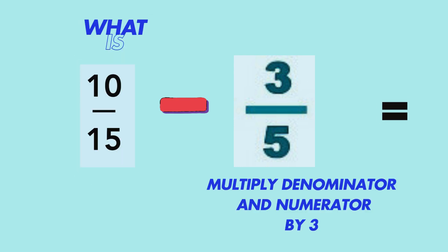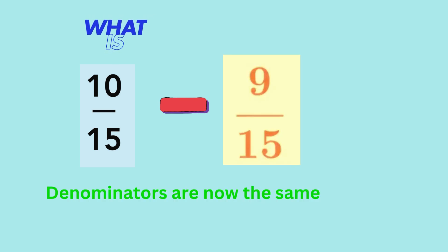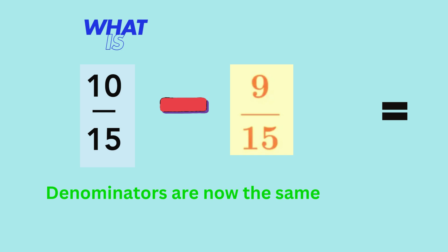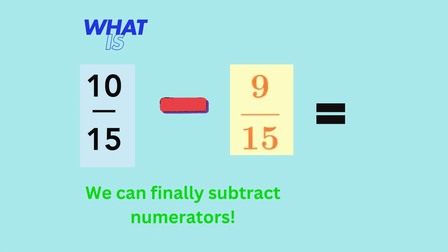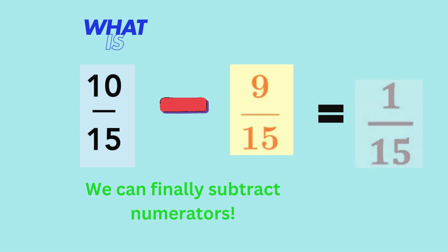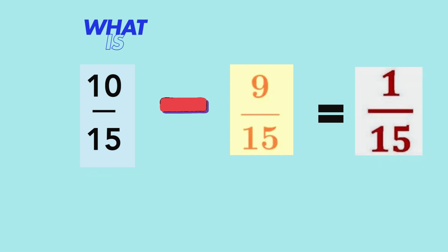For the fraction three-fifths, we shall multiply the denominator by three and then do the same to the numerator to keep the fraction equivalent. So, now three-fifths is rewritten as nine-fifteenths. Now that both denominators are the same, we can finally subtract numerators to get our answer. Ten minus nine is one, so the solution is one-fifteenth.